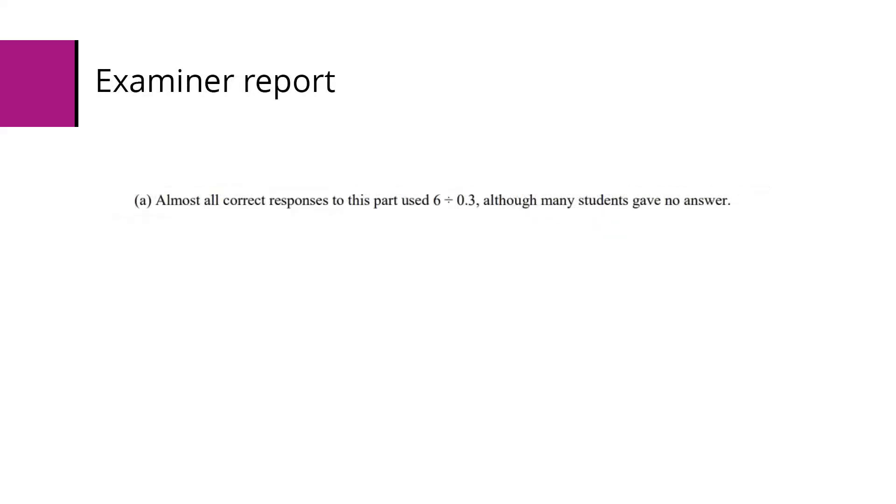In the mark scheme we're just looking for that calculation essentially, either fully 0.9 minus 0.6 in the denominator, or you can just put that as 0.3, and we're looking for an exact answer there. The examiner's report shows that almost all the correct responses to this just use 6 divided by 0.3 directly, although a number of students didn't provide an answer at all.